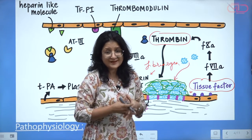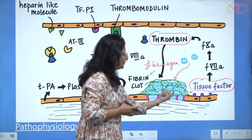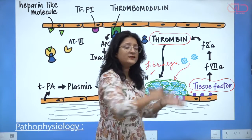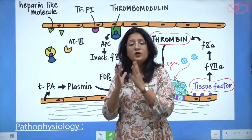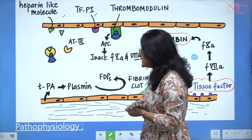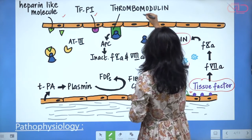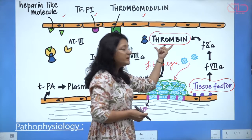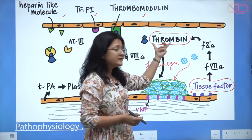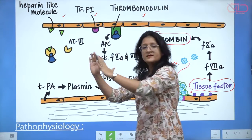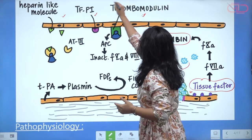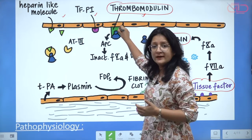The body must maintain homeostasis so that clotting only happens at the site of endothelial injury and does not extend further. There are many anti-coagulant factors expressed by normal healthy endothelial cells, like heparin-like molecules and tissue factor pathway inhibitor. One important factor I want to emphasize is thrombomodulin: thrombin involved in fibrin clot formation at the site of injury gets swept into the circulation, where it encounters healthy endothelial lining and binds to thrombomodulin on the surface of those cells.